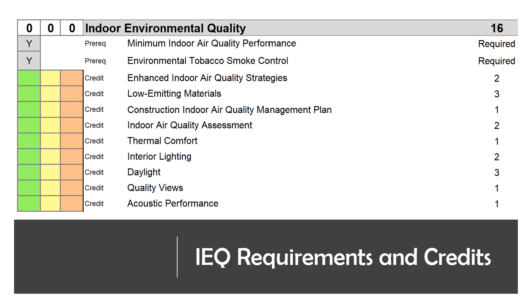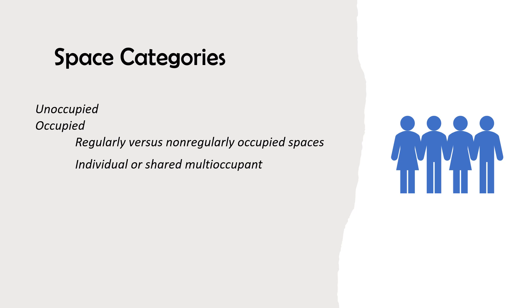There are two prereqs in Indoor Environmental Quality and up to 16 points in nine credit areas. It's important to identify which spaces are used by the occupants, including any visitors and what activities they perform in each space. Depending on the space categorization, the credit requirements may or may not apply.